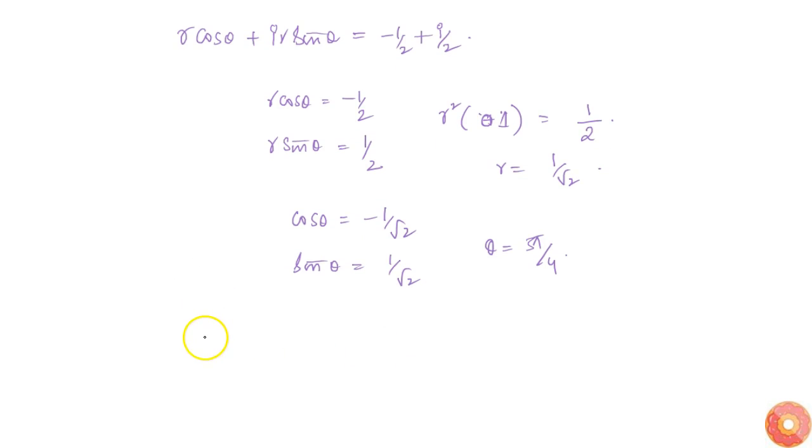So therefore modulus, which is equal to r, is equal to 1/√2. And argument θ is equal to 3π/4. So this is what we get from this question.